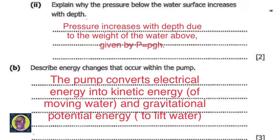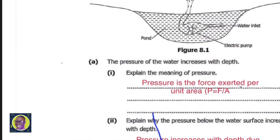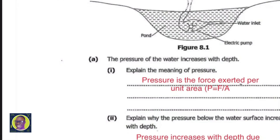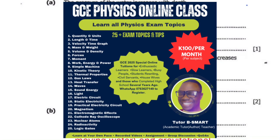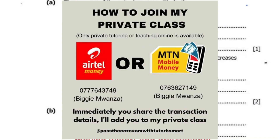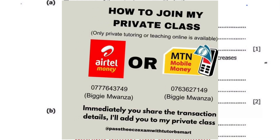If you want to excel in physics, I'm right here. Visit my website shown on screen to get access to our online classes with Tutor B Smart. I'll be glad to help you pass physics with a distinction — covering both chemistry and physics. Bye for now.